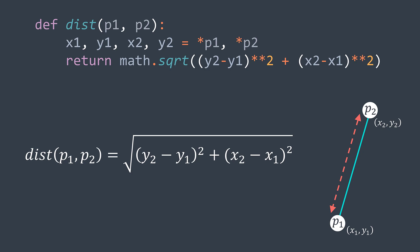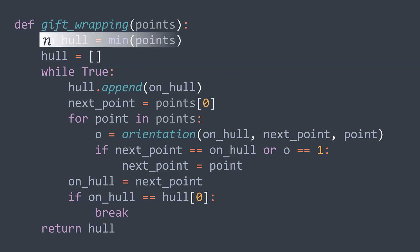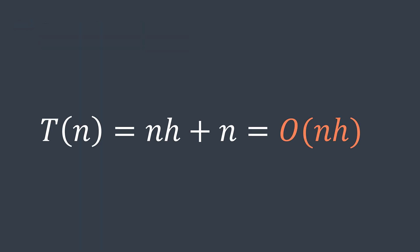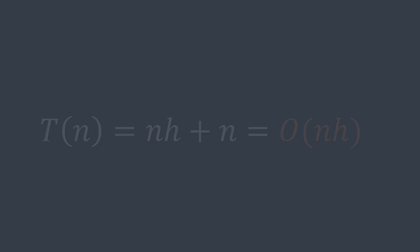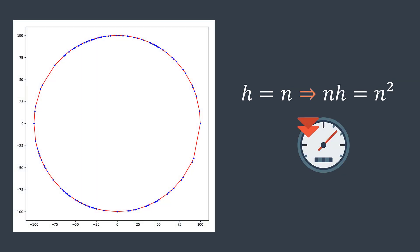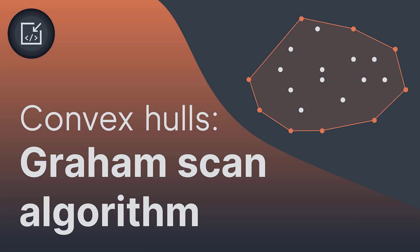For time complexity, finding the minimum point costs O(n). The outer loop runs h iterations — one per hull point — and the inner loop traverses all n points, giving O(n × h) overall. For space complexity, we store the hull, giving O(h). In the worst case where all points are on the hull, h equals n, yielding O(n²) time complexity, which is slow. That's why in the next video we will see a more optimized algorithm: the Graham scan algorithm.